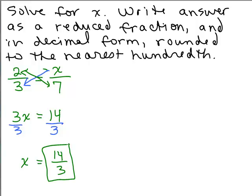Now it says, also write it in decimal form rounded to the nearest hundredth. Well, you can either get out a calculator and do that or do it with long division. I'll do it with long division because they're easy enough numbers. 3 into 14 is going to go in 4 times.